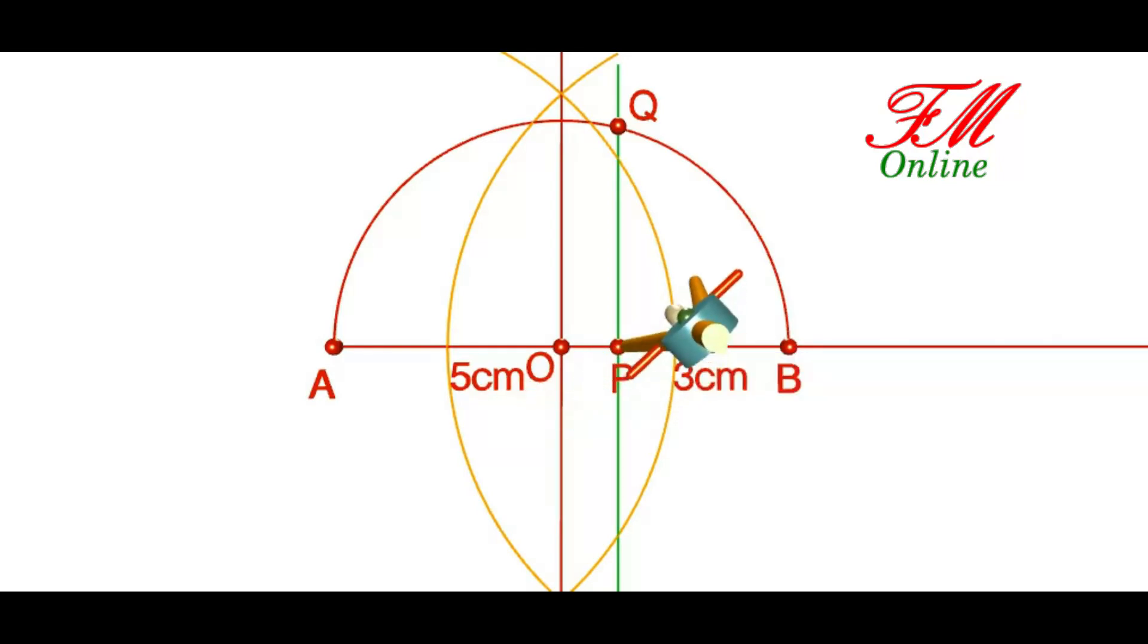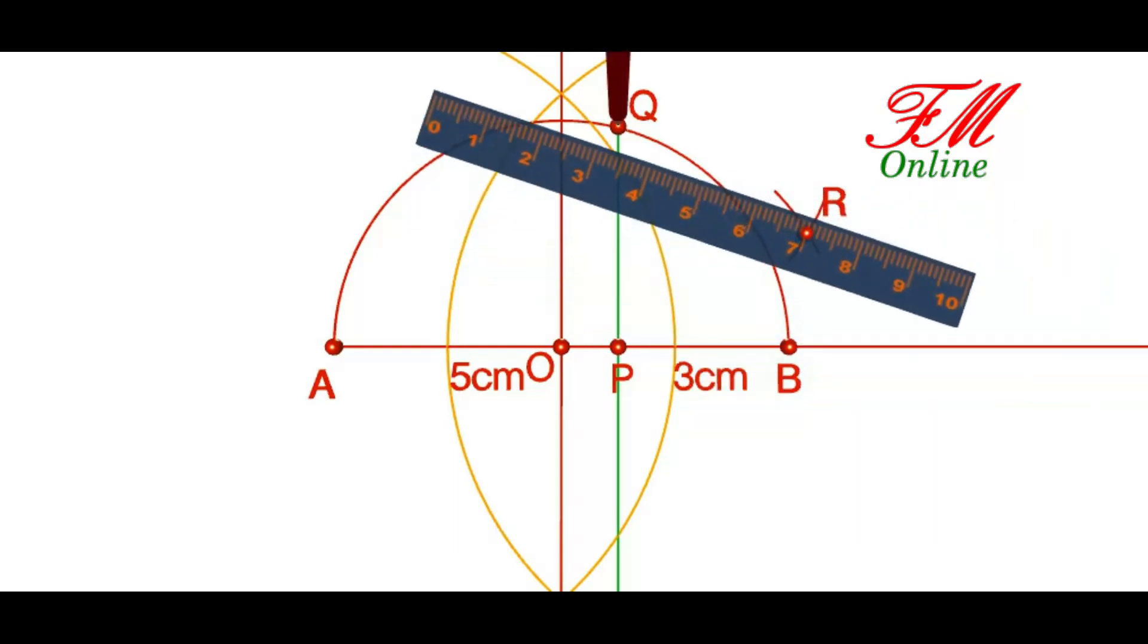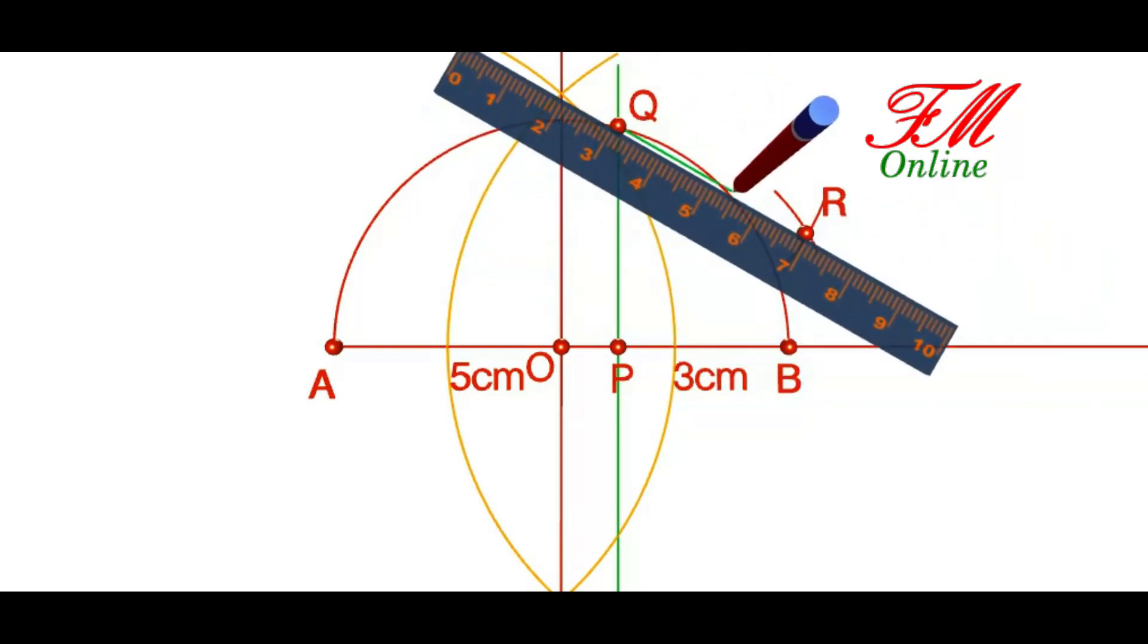Extend the line AB and take PQ, that is root 15, in the compass. Draw arcs from P and from Q such that both arcs are of length root 15. Mark the point R and join QR and PR.